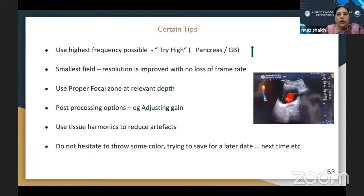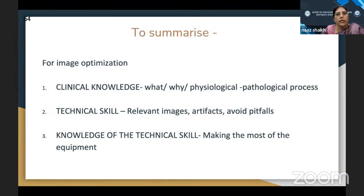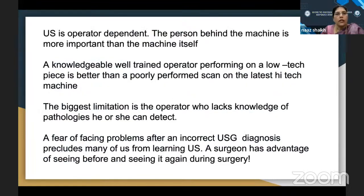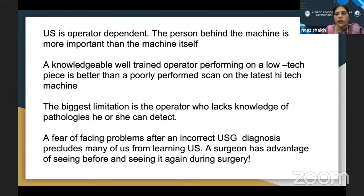Use tissue harmonics to reduce artifacts. To summarize for image optimization: we should have thorough clinical knowledge of the physiological and pathological processes. Technical skill is important to get relevant images, understand artifacts, and avoid pitfalls. Since ultrasound is operator dependent, the person behind the machine is more important than the machine itself. A knowledgeable, well-trained operator performing on a low-tech piece is better than a poorly performed scan on the latest high-tech machine. The biggest limitation is not the machine — it is the operator who lacks knowledge of the pathologies he or she can detect.